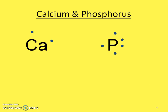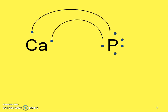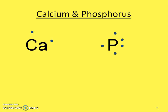Now let's look at a more confusing one — we've got calcium and phosphorus. So here's calcium and here's phosphorus — what's going to happen? Calcium has two valence electrons. Phosphorus needs three. Let's see what happens here.